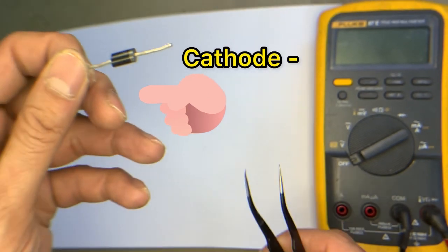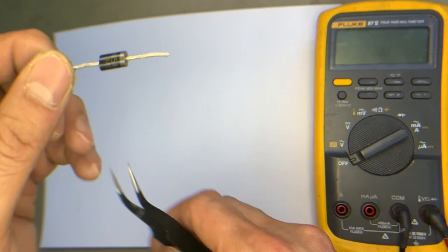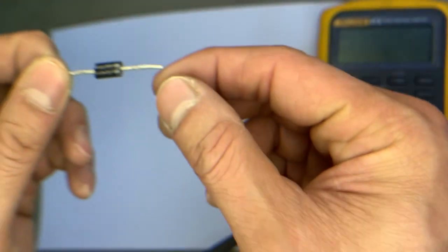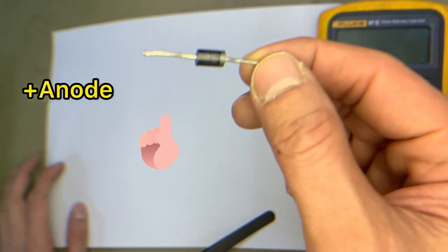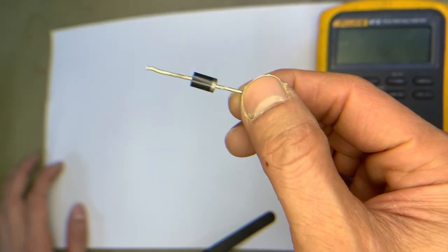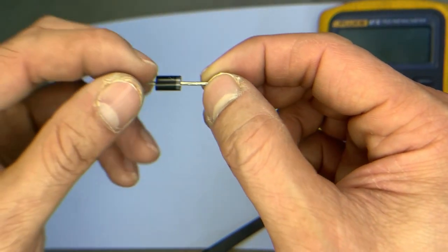There is a white strip - that's the cathode. The left side is fully black, so that's the anode. The right side has a white strip, so that is the cathode, and the left side is the anode.